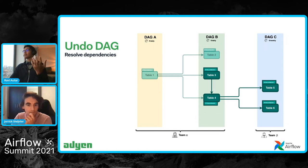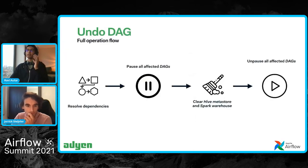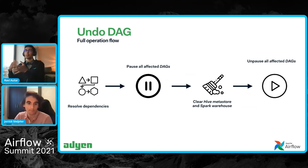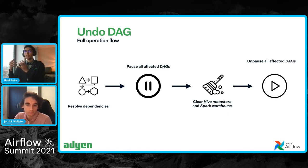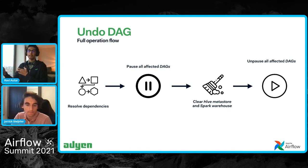After resolving dependencies, we start the full undo DAG procedure. The second step is to pause all the affected DAGs that contain those tables. After that, we clear the Hive metastore, clear the Spark warehouse — meaning the actual data on HDFS — and also clear the Airflow task instances. After that is done, we unpause all of the affected DAGs.